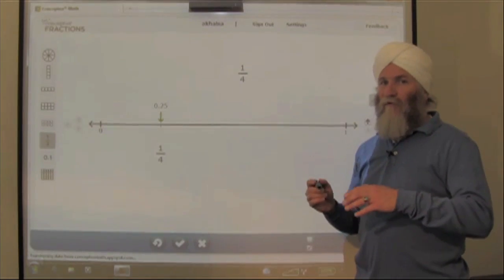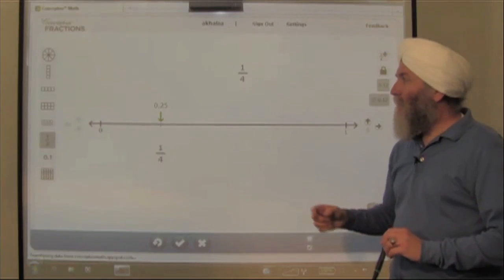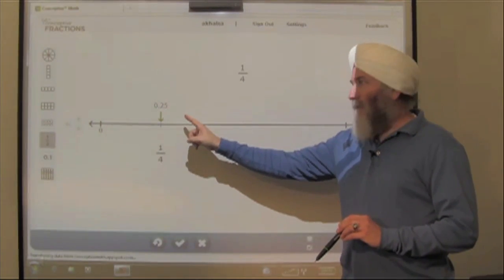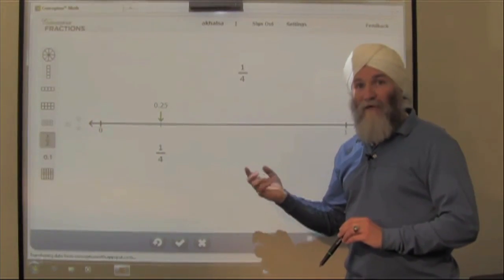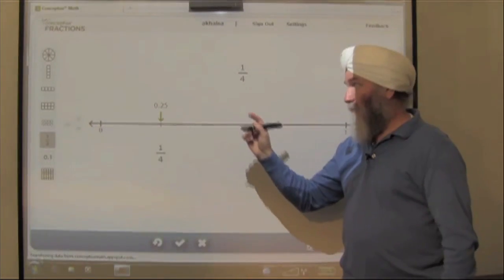Sometimes we call 1/4 a quarter. If we have a quarter in our hand—money—that quarter is written in a manner that's very similar to this: 25 cents. When we write 25 cents, it looks very similar to 0.25.